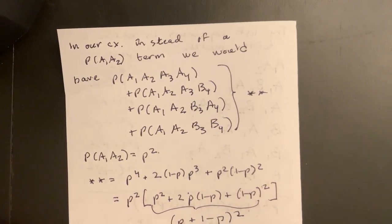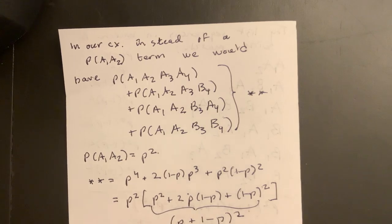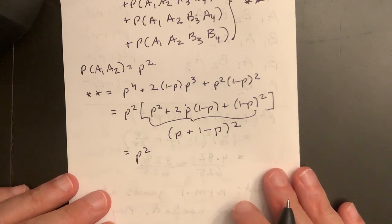This is just equal to P plus one minus P squared, right? That's what that is. But that's just one. So the whole thing is P squared.